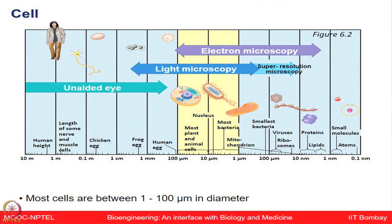At the structural level, most cells are found in the diameter range of 1 to 100 microns. Larger cells, like a chicken egg, can be seen with the naked eye. To look at smaller plant and animal cells you need a light microscope, and for ultrastructural details of organelles, bacteria, or viruses, you need electron microscopy.